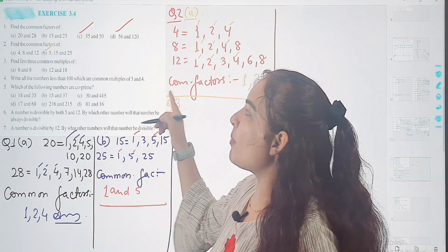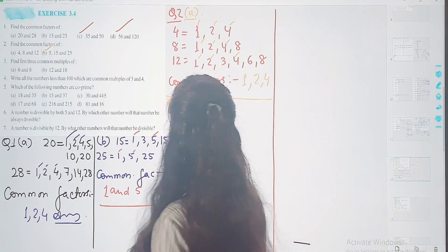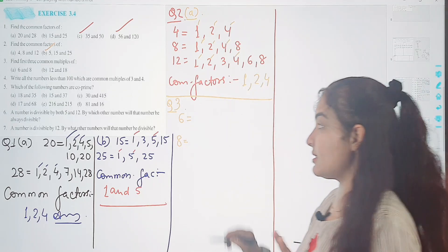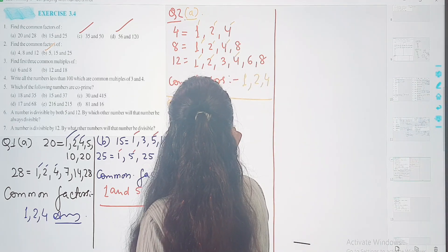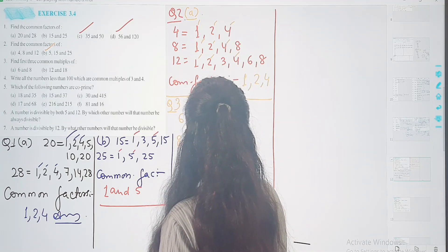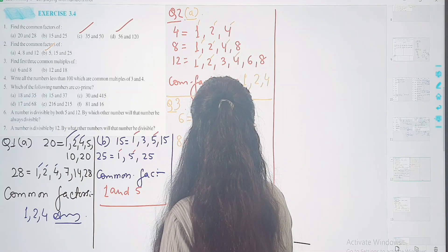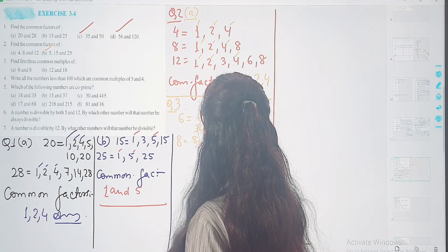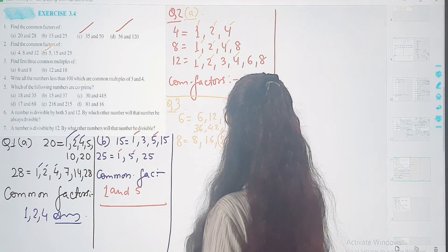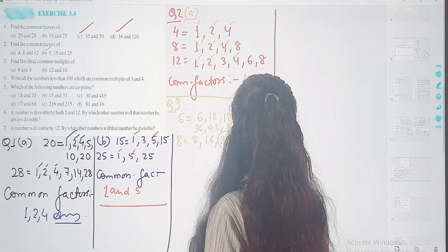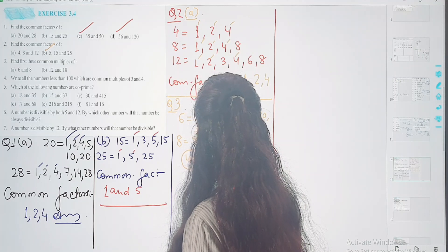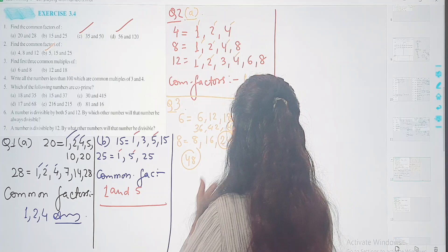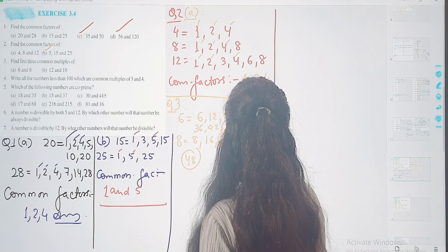Let's start question number 3. First 3 common multiples of 6 and 8. Aapko 6 ke table ke multiples tab tak dene hai or 8 ke jab tak inke 3 common multiples na aajayen. 6: 6, 12, 18, 24, 30, 36, 42, 48. 8: 8, 16, 24. Deekho, pahla number aapko mil chuka hai. Then 32, 40, 48.